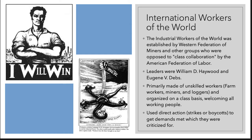Unlike the AFL, the IWW was primarily made up of unskilled workers — farm workers, miners, loggers — organized on a class basis, welcoming anybody and everybody. They said they would take all the workers the AFL denied, because they wanted to fight for everybody's rights. The International Workers of the World used direct action — strikes or boycotts — to get their demands met. They were criticized for these actions, seen as a lowly, violent union that was bad for society.